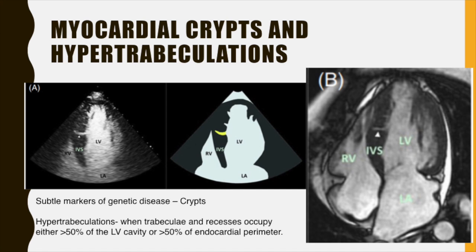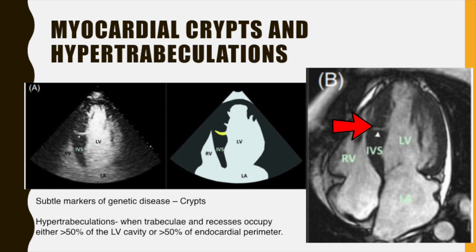Myocardial crypts and hypertrabeculations are considered as subtle markers of the genetic disease in HCM. Image A is an echo as well as an illustration of a myocardial crypt. Image B shows a myocardial crypt at the arrowhead on a four-chamber CMR. Hypertrabeculations are when the trabeculae and recesses occupy either more than 50% of the LV cavity or more than 50% of the endocardial perimeter. This completes the morphological assessment on CMR in patients with hypertrophic cardiomyopathy.